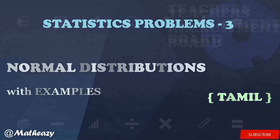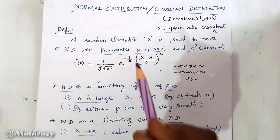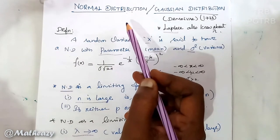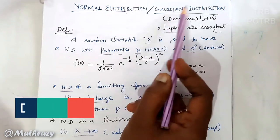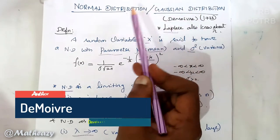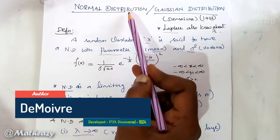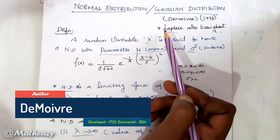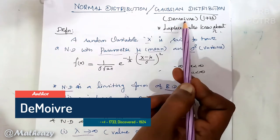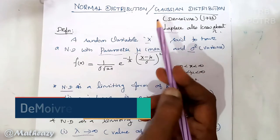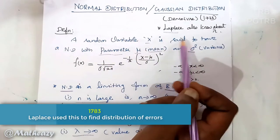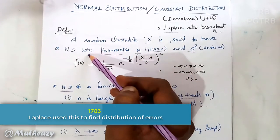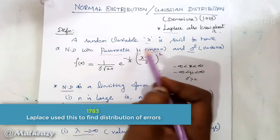In this video, we discuss Part 3 of statistics: Normal Distribution. The another name of normal distribution is the Gaussian distribution. The author of normal distribution is Gauss, and Laplace also introduced it. Definition: a random variable X is said to follow a normal distribution with parameters mean and variance.